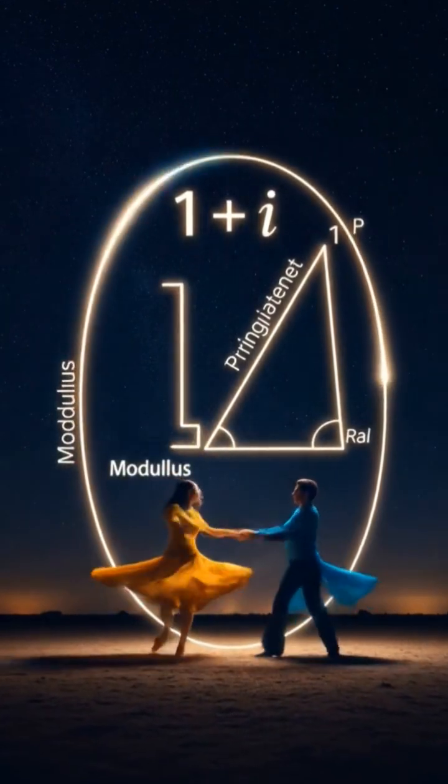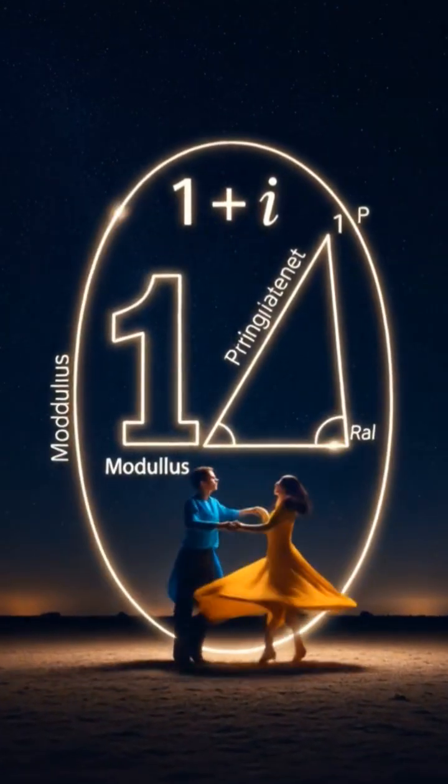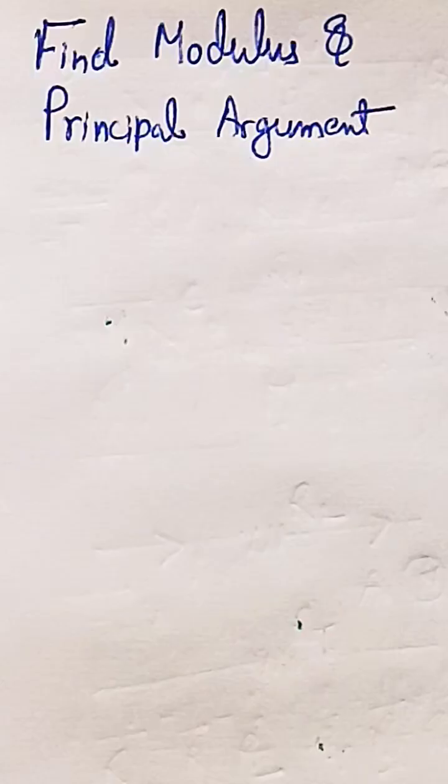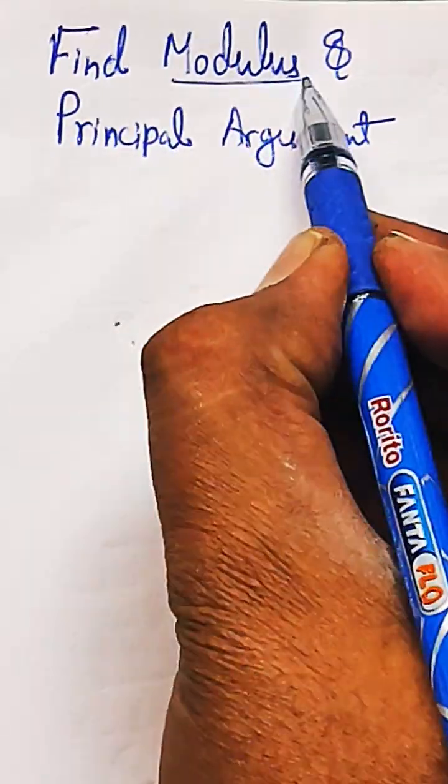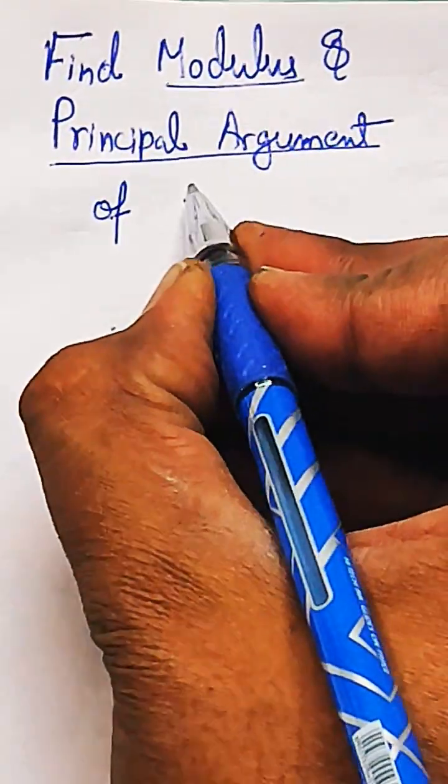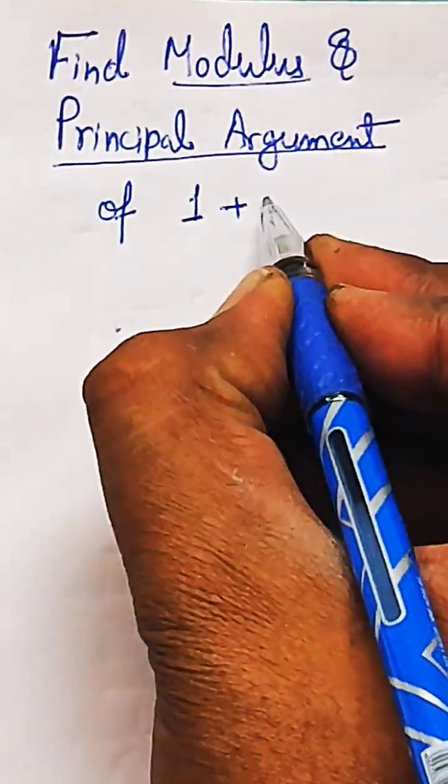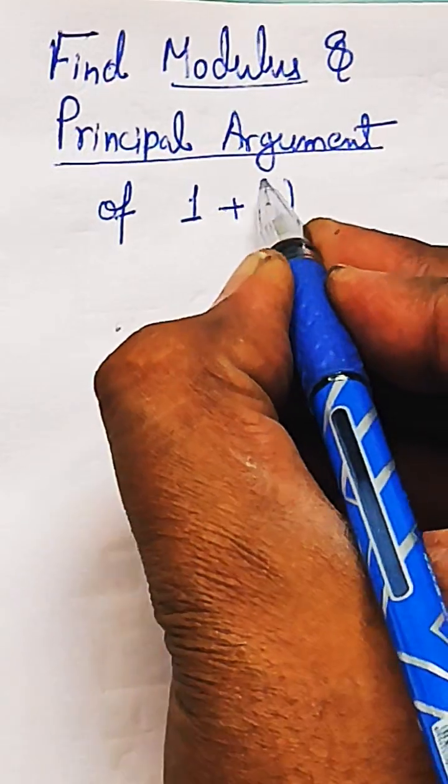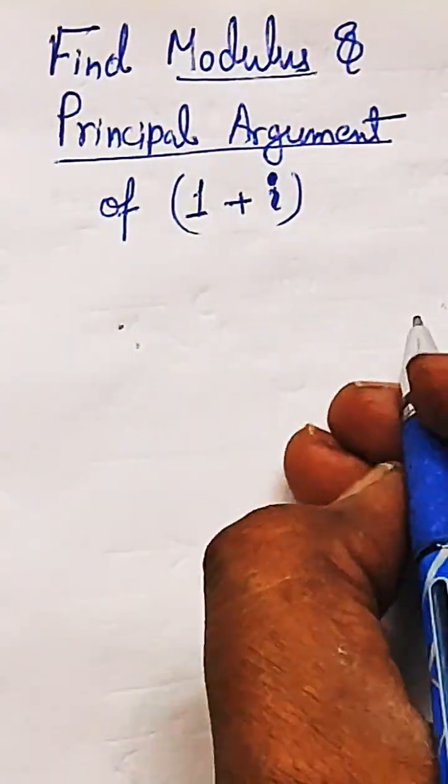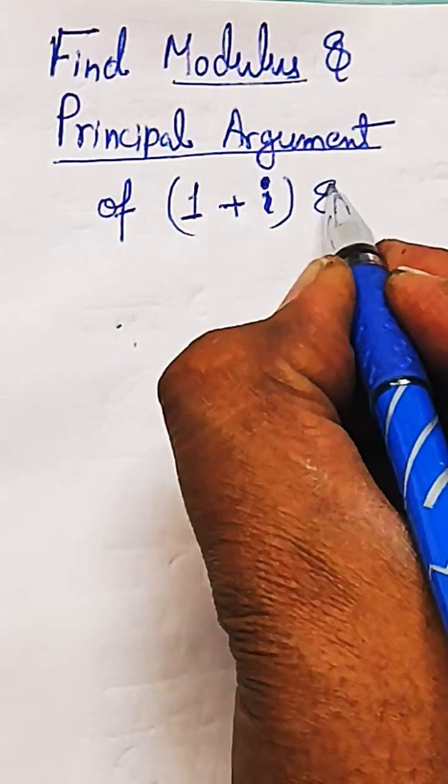To find the modulus and principal argument of any complex number, let us see into this question. We need to find the modulus and principal argument of the given complex number, which is 1 plus i. The real part is 1, imaginary part is the coefficient of i that is 1, and also we need to express this complex number into its polar form.